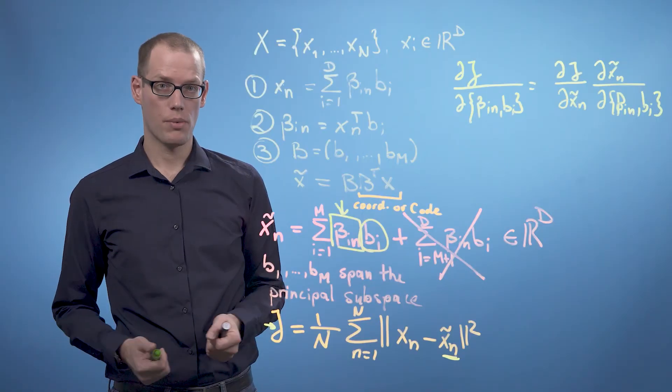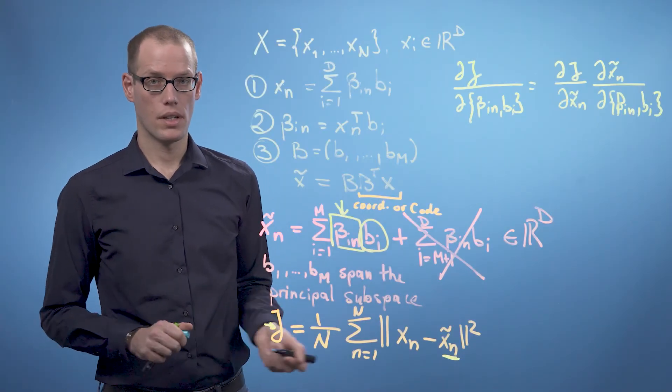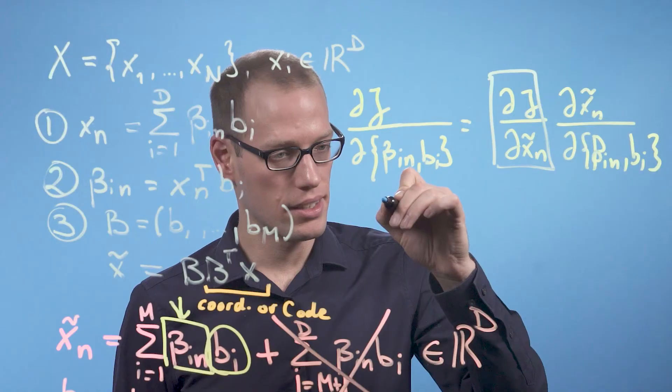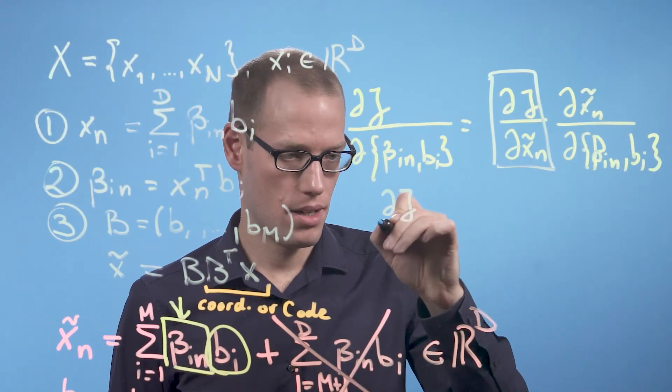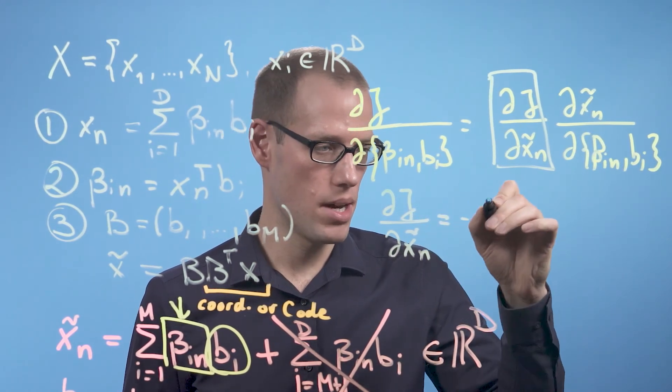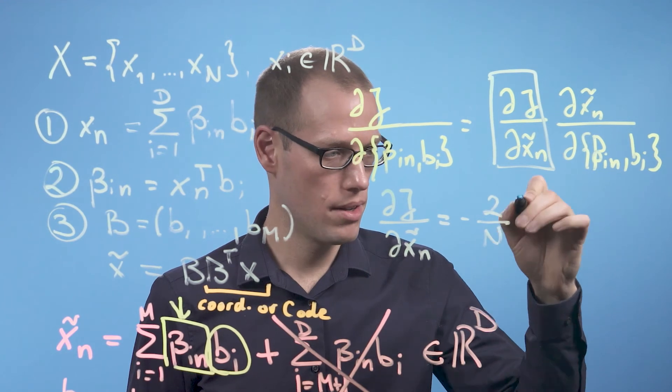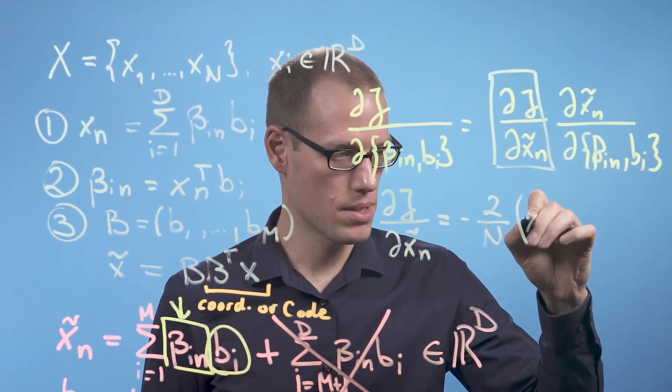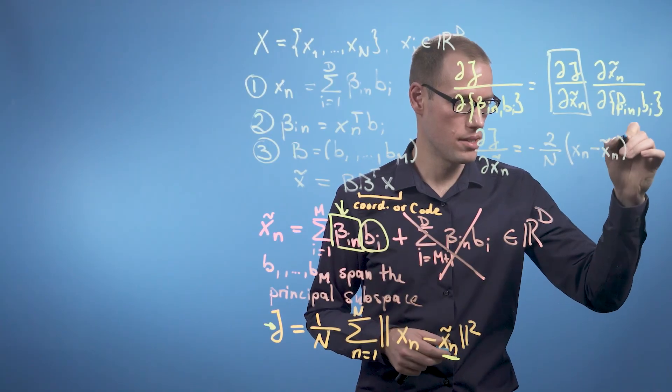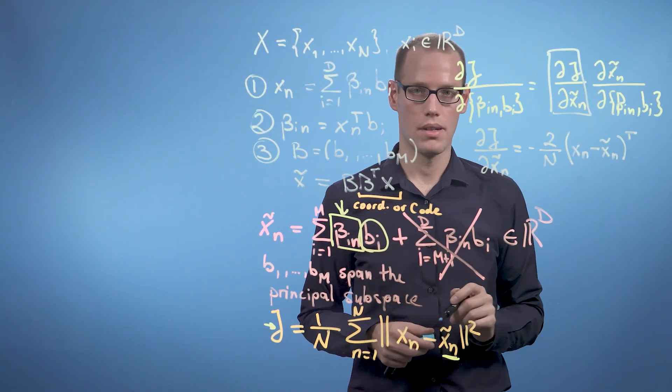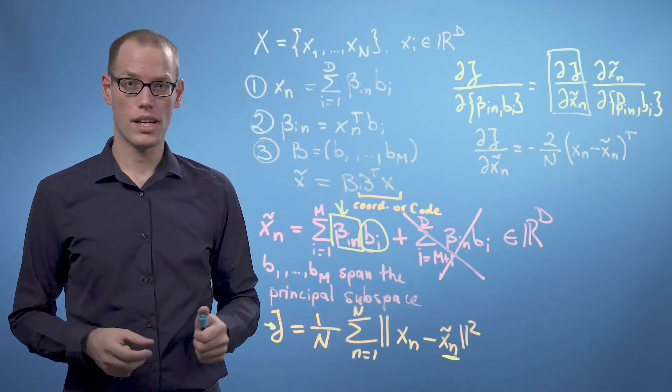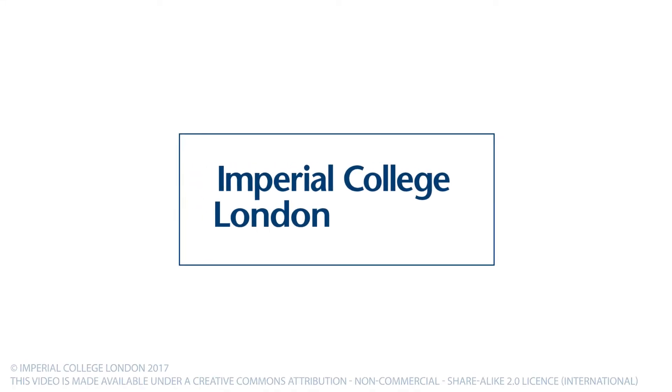And the first part we can already compute. And we get dJ by dX_n tilde is minus 2 over n times (X_n minus X_n tilde) transpose. And the other derivatives we compute in the next videos. Thank you.